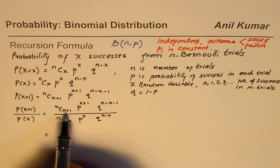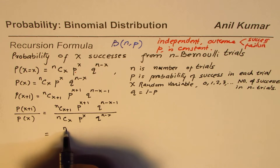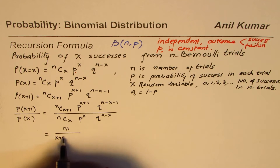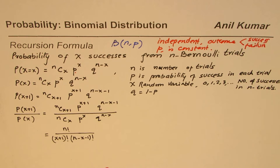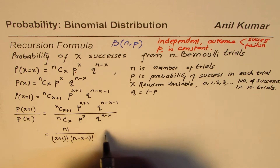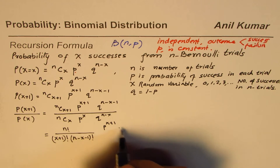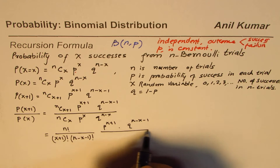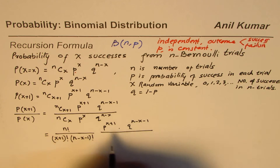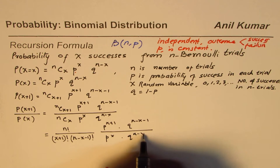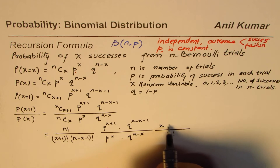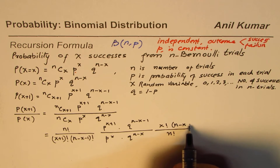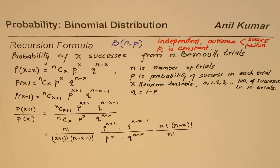Let's write down the formula for nC(x+1): that is n factorial divided by (x+1) factorial times (n−x−1) factorial. In the numerator we have p^(x+1) times q^(n−x−1), and in the denominator we have nCx expanded as n factorial over x factorial times (n−x) factorial. That is the expansion of this ratio, and now we can simplify it.